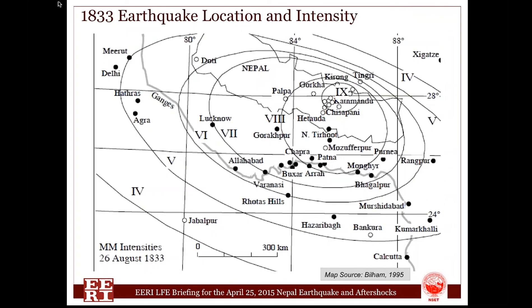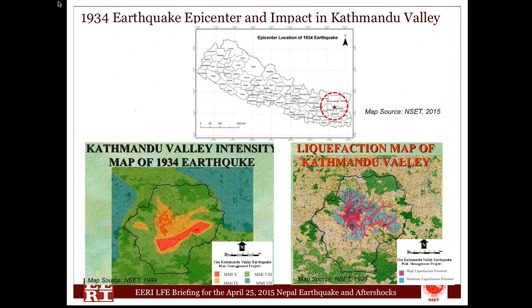The 1833 earthquake of August 26, 1833 occurred somewhere very close to Kathmandu, and the level of shaking produced in Kathmandu Valley was intensity 9. The recent Gorkha earthquake also occurred close to Kathmandu Valley. The 1934 earthquake of January 15, 1934, of magnitude 8.3, occurred approximately 200 kilometers east of Kathmandu and produced intensity 9 and 10 in Kathmandu Valley.